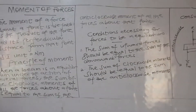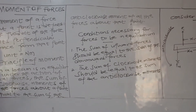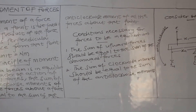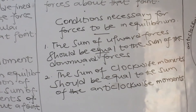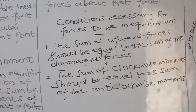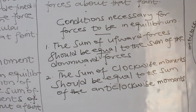What are the conditions necessary for forces to be in equilibrium — that is, balance? Number one: the sum of the upward forces should be equal to the sum of the downward forces. Number two: the sum of the clockwise moments should be equal to the sum of the anticlockwise moments.